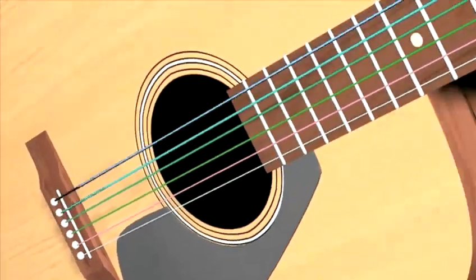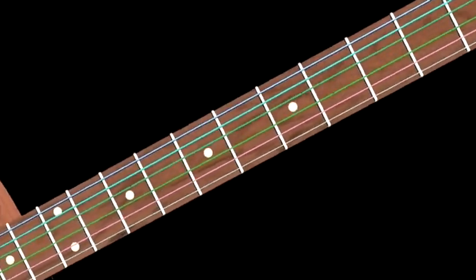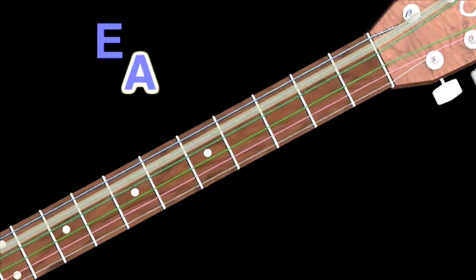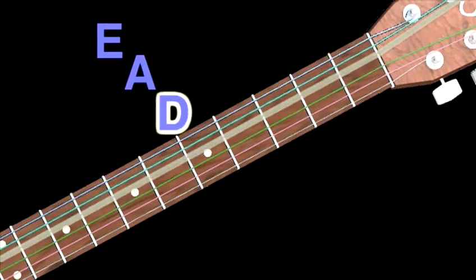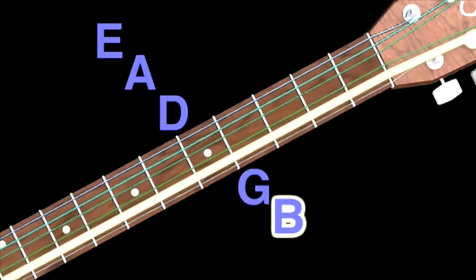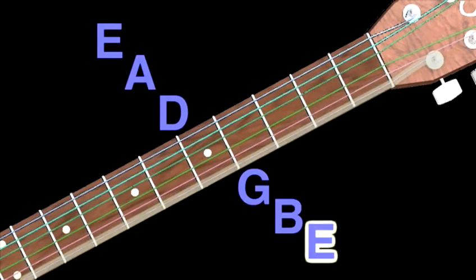Before we start, remember always keep the guitar in tune. So remember what we've got here: bottom string E, A, D, G, B, top E.